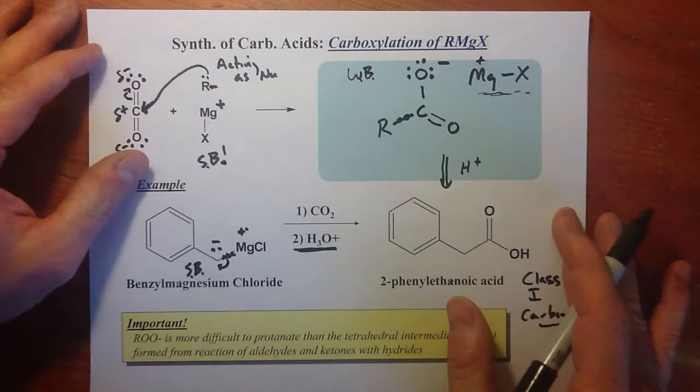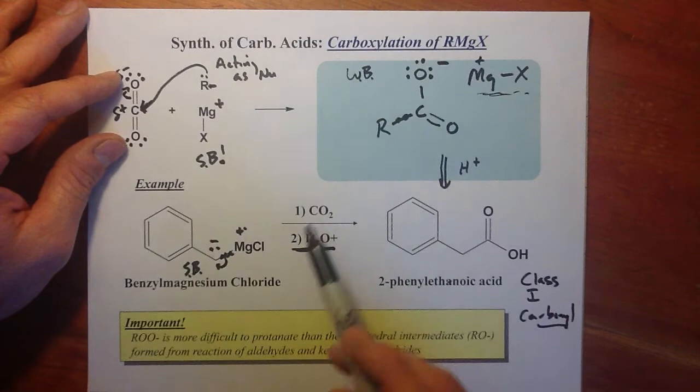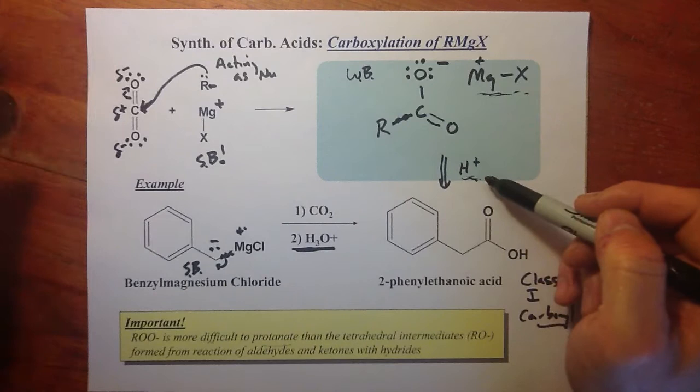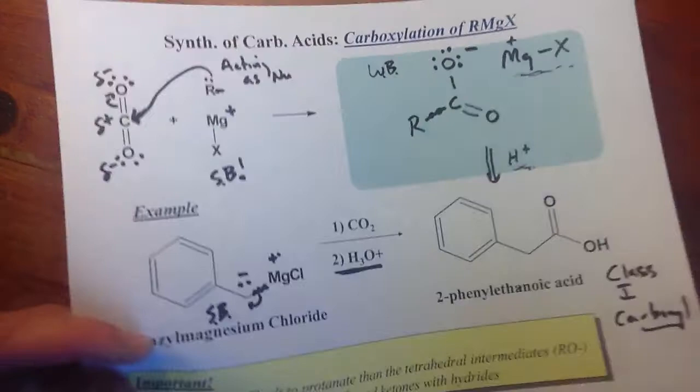That's one way — carboxylation of a Grignard reagent. There are many others to make carboxylic acids. It's important to remember that this carboxylate is more difficult to protonate than just an alcohol, because the negative charge is resonance-delocalized. We may need something stronger than acetic acid — perhaps a little sulfuric acid in solution — to protonate that oxygen.